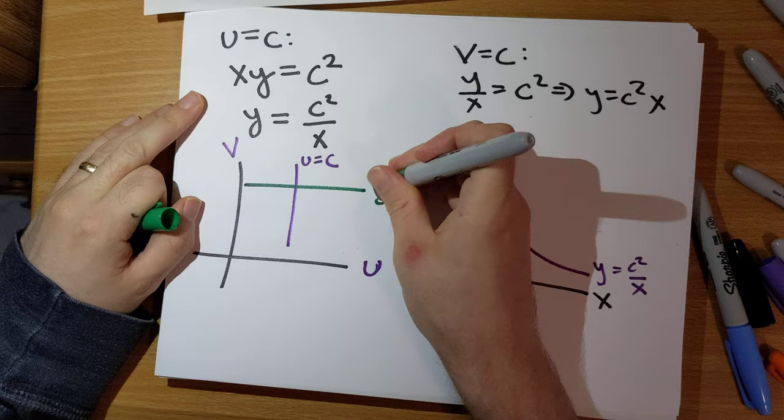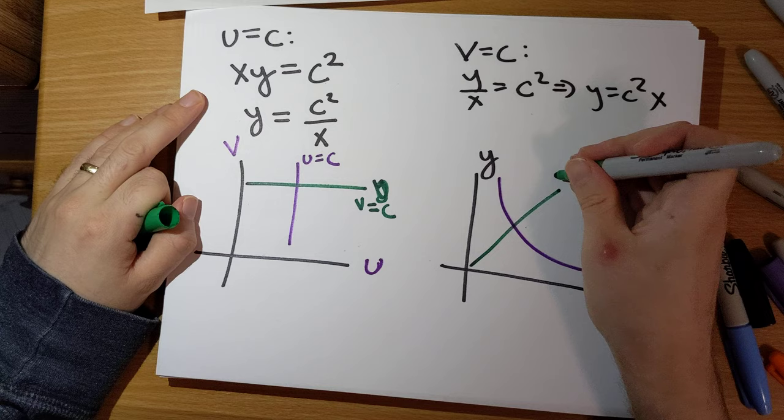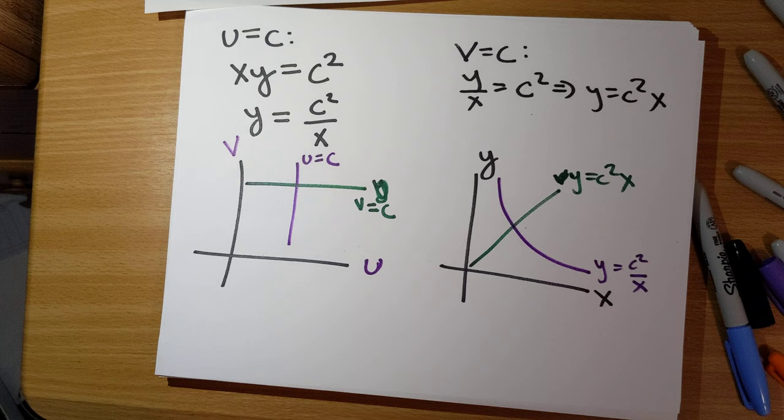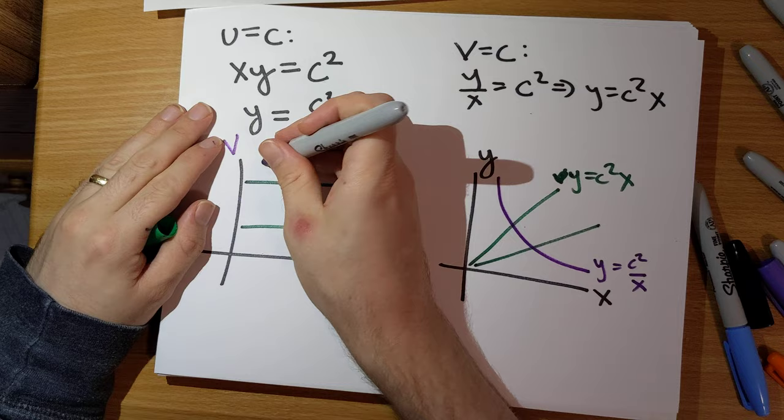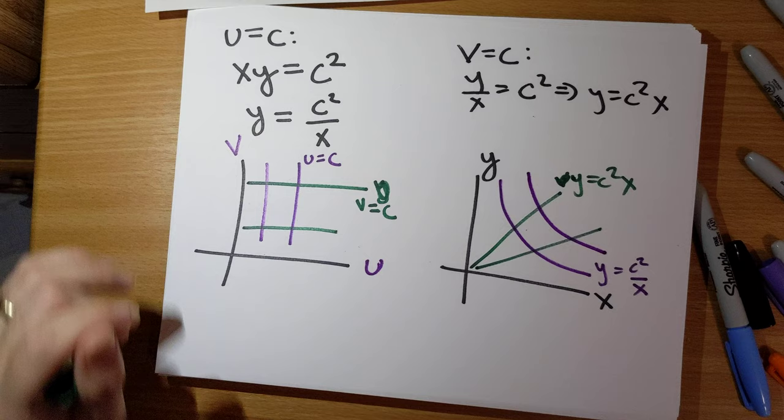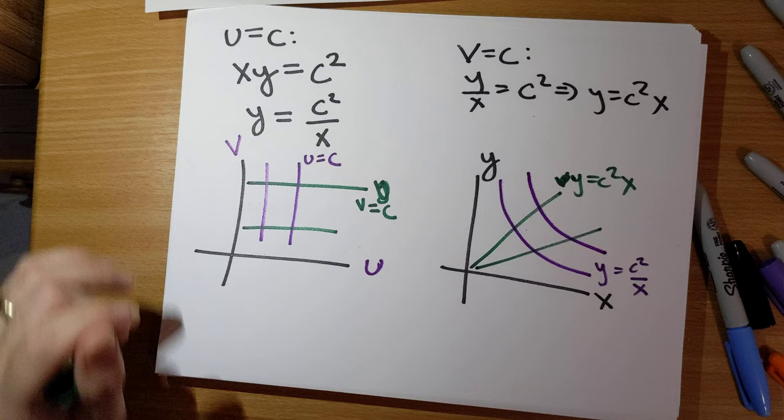So v = constant maps to a straight line through the origin in the XY plane, and different values of v give different lines through the origin. Different values of u = c give different hyperbolas. That's how this nonlinear map works — we'll be dealing with both linear and nonlinear maps throughout the rest of these videos.